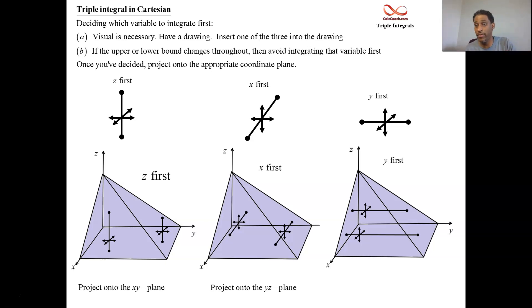If so, then you don't wanna do that variable first. But if it's the case where it doesn't change and you wanna do that variable first, then after integrating out that first variable, you project onto the coordinate plane, where that variable is equal to zero, in this case, that would be y equals zero is the x, z coordinate plane.